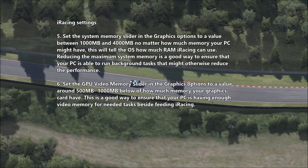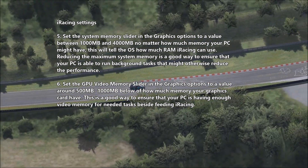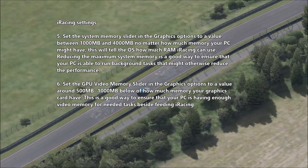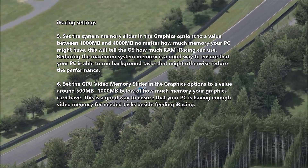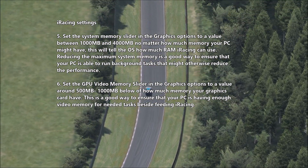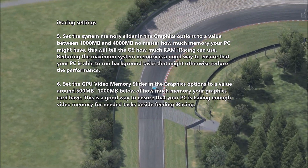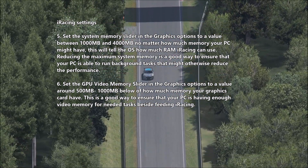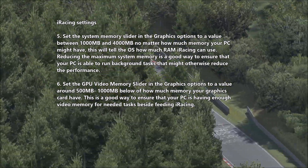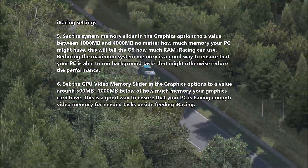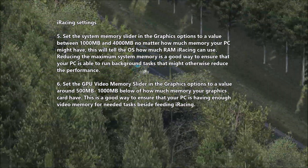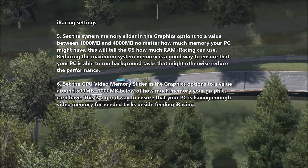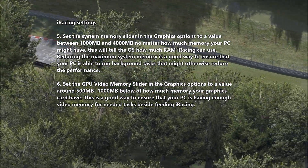Set the system memory slider in graphics options to a value between 1000MB and 4000MB, no matter how much memory your PC has. This tells the operating system how much RAM iRacing can use. Reducing the maximum system memory is a good way to ensure your PC can run background tasks that might otherwise reduce performance. Set the GPU video memory slider to around 500MB to 1000MB below the total memory your graphics card has, to ensure enough video memory for tasks besides feeding iRacing.